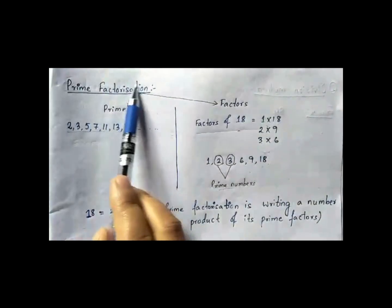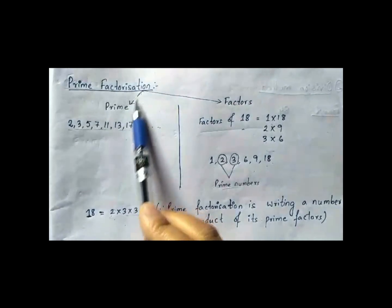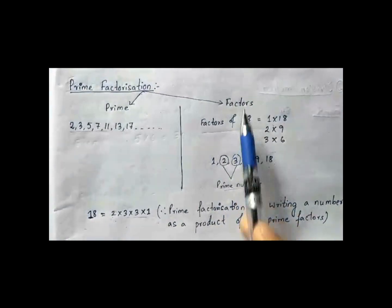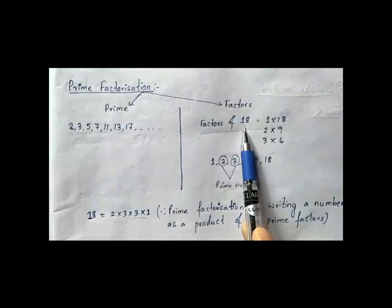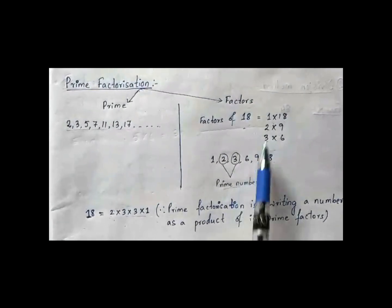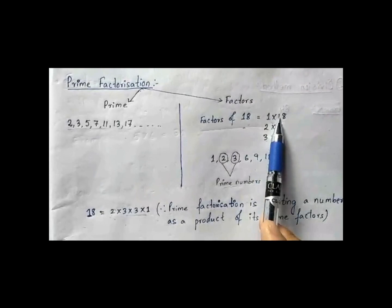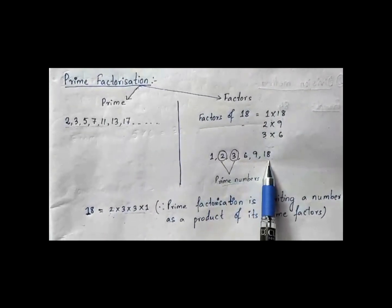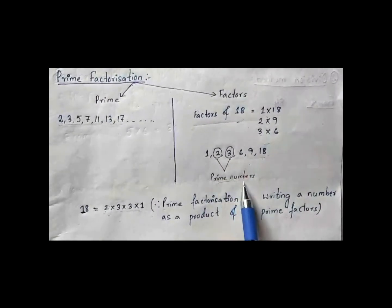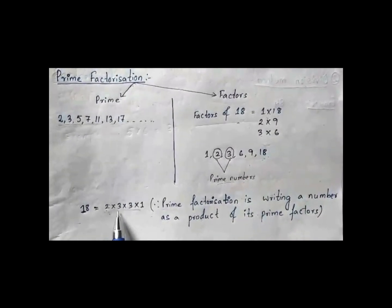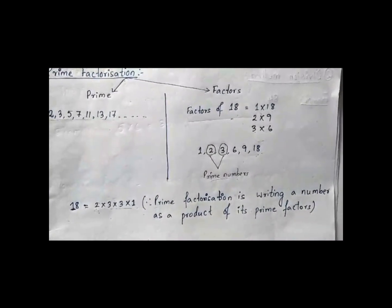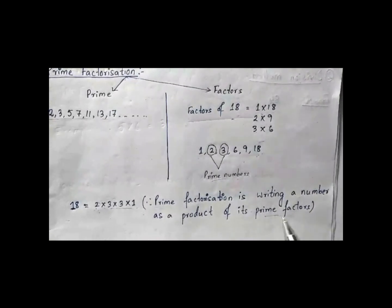Now let us see what is prime factorization. To understand this, we need to know what are prime numbers and factors. Let us take an example of the number 18 and write all its possible factors: 1, 2, 3, 6, 9, and 18. Out of these factors, 2 and 3 are the prime numbers. So 18 can be written as 2 multiplied by 3 multiplied by 3. Prime factorization means writing a number as a product of its prime factors.